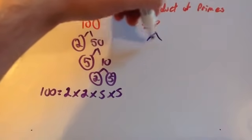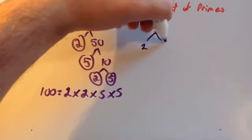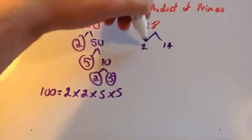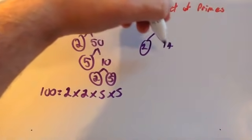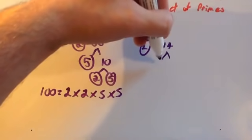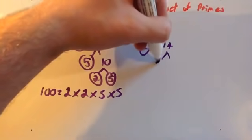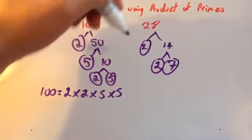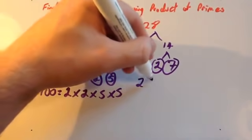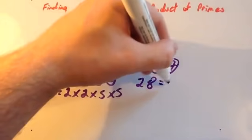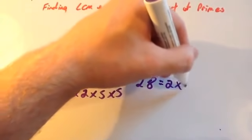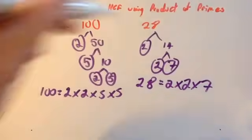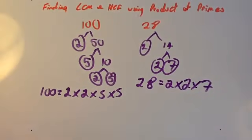For 28: 28 is 2 times 14; 2 is prime. 14 is 2 times 7, and they're both prime. So 28 equals 2 times 2 times 7. We've now got both numbers as a product of primes.